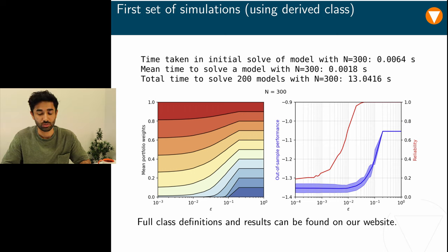This makes it easy to make derived classes for each numerical experiment in the paper without having to write the whole fusion model again and again. The viewer will find all class definitions and the relevant code in the Jupyter notebook that was mentioned previously. Here, I will just briefly show you the results of the first simulation that is done over a sample of cardinality n equals to 300.